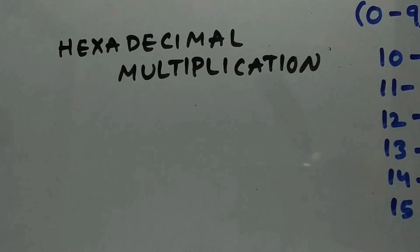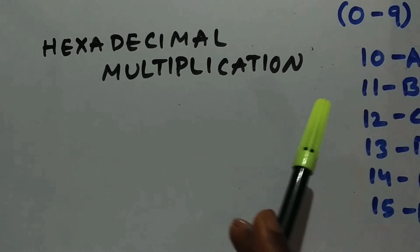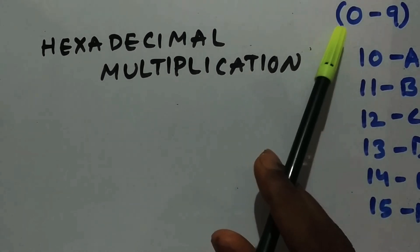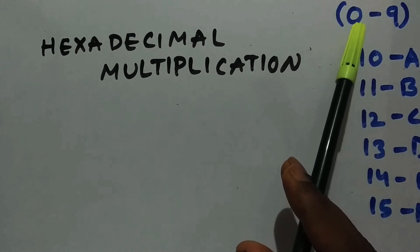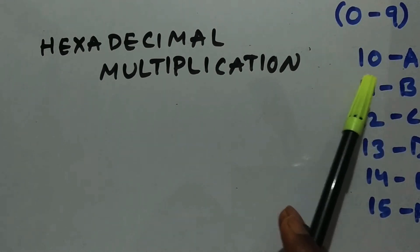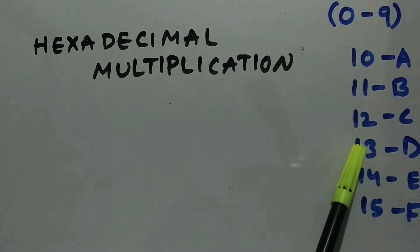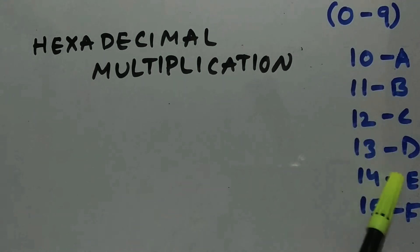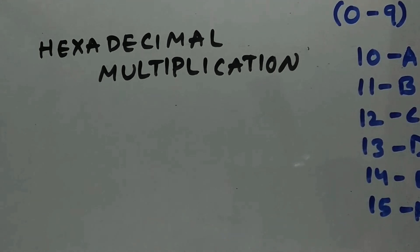As you know, hexadecimal values from 0 to 9 are similar to decimal values. From 10 onwards we have A for 11, B for 12, C for 13, D for 14, E, and 15 as F. Now let's go into hexadecimal multiplication.